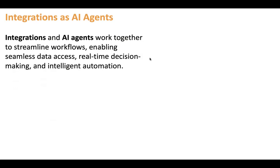Earlier we used to build integrations that work exactly as we designed them. If we designed one integration with 10 steps, every time we ran that integration, all those steps would execute in the order we defined. AI agents are not like that. An AI agent picks which step to execute as per the situation and condition, and performs reasoning-based execution as per the need.